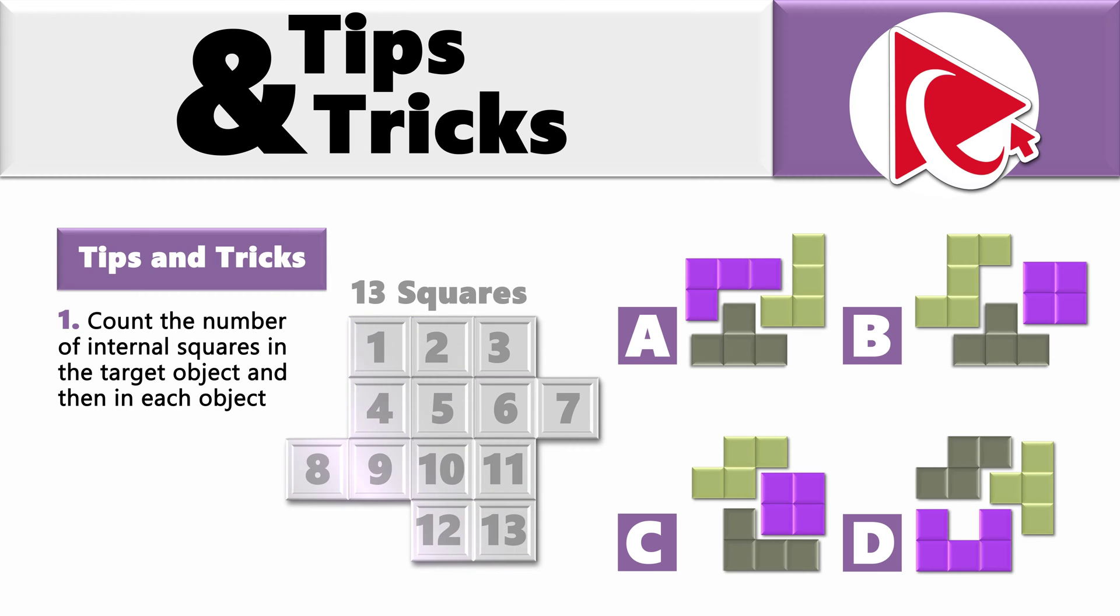Take a close look to see how the target shape is broken down into squares. There are 13 squares inside. Now let's count the squares in each one of the choices. Choice A has 12 squares, choice B has 13 squares, choice C has 12 squares, and choice D has 13.